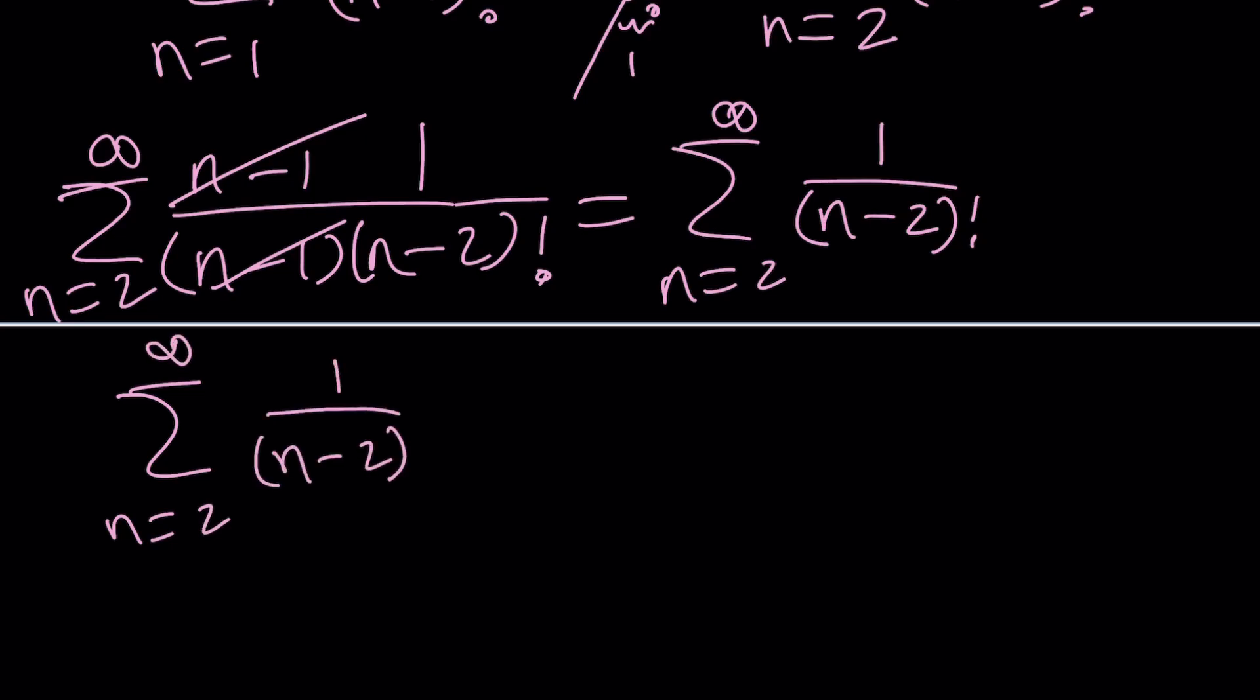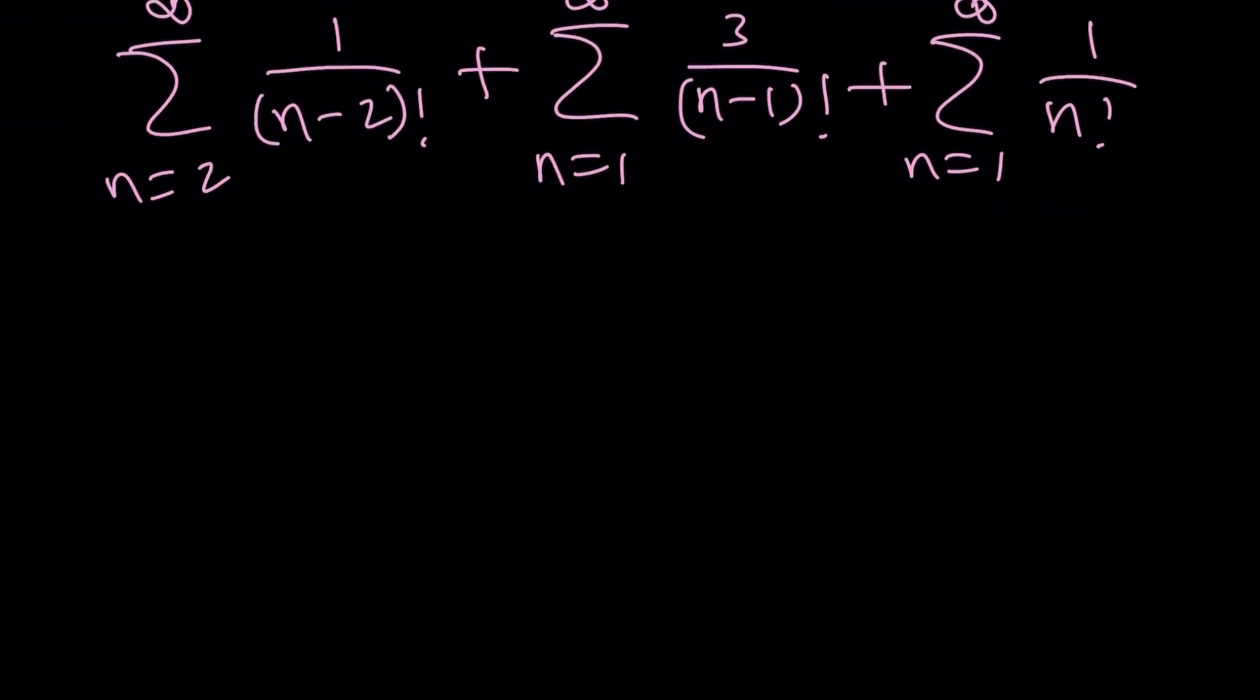Plus—if you remember we had a 3 right—1 to infinity, 3 over (n-1) factorial, that's cool. Plus n equals 1 to infinity, 1 over n factorial. What are these? Okay, you gotta know this sum. Let me talk about this real quick. If you have x to the power n divided by n factorial and n starts at 0 to infinity...